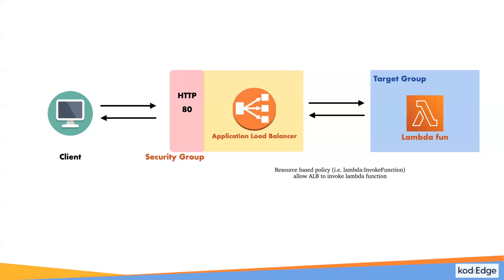In this session, we will create a Lambda function. After that, we will create an application load balancer. We will attach a security group to the application load balancer. A security group acts just like a firewall, which allows inbound or outbound traffic into the application load balancer. We will create an inbound rule for HTTP traffic on port 80, so that from our browser we can access the application load balancer.